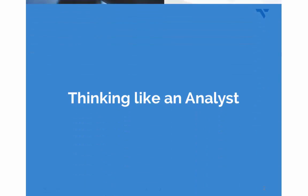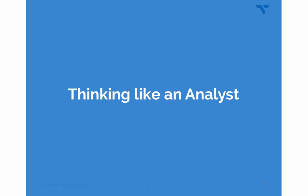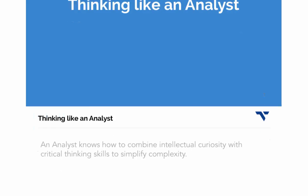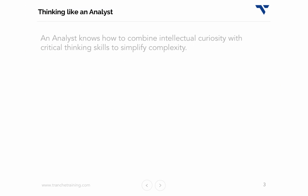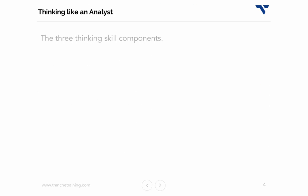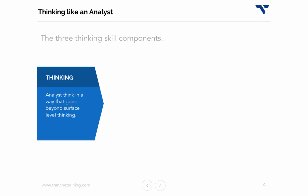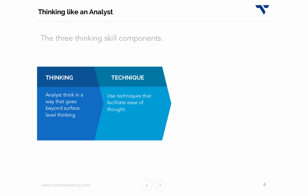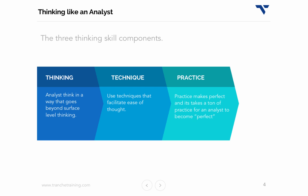In this lesson, which is the last lesson in module 1, we're going to learn how to think like an analyst. An analyst's thinking process consists of three components: the thinking itself, techniques, and practice. Let's unpack each one.